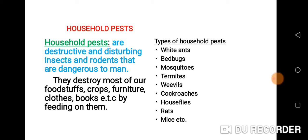These are the types of household pests: white ants, bed bugs, mosquitoes, termites, weevils, cockroaches, house flies, rats, mice, etc.